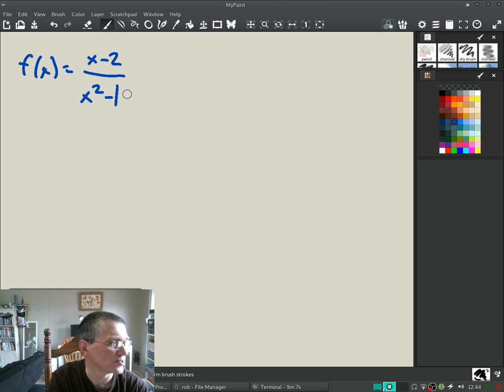You have a polynomial degree 1 on top and a polynomial degree 2 on the bottom. So rational functions have asymptotes, so it's probably going to have some asymptotes. Where does the bottom equal 0? That's sort of our first step. Find out where the bottom equals 0, because we can't have 0 on the bottom. We can't divide a number by 0, so there's an asymptote, a line that it can't cross.